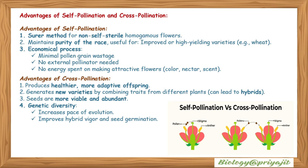Advantages of self-pollination: it is the surer method for non-self-sterile homogamous flowers; maintains purity of the race; useful for improved or high-yielding varieties like wheat; it is an economical process with minimal pollen wastage. No external pollinator is needed and no energy is spent on making attractive flowers with color, nectar, or scent.